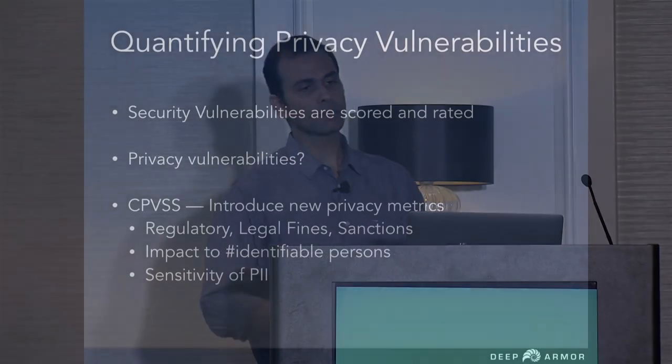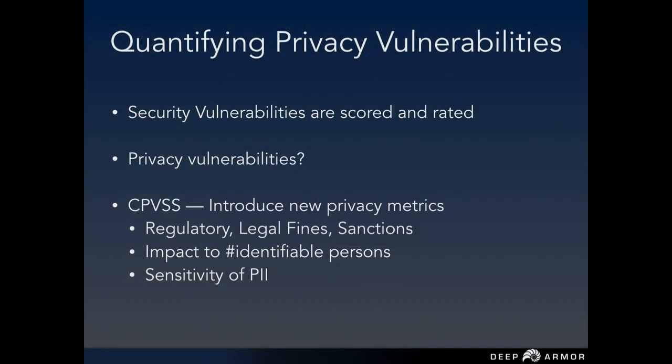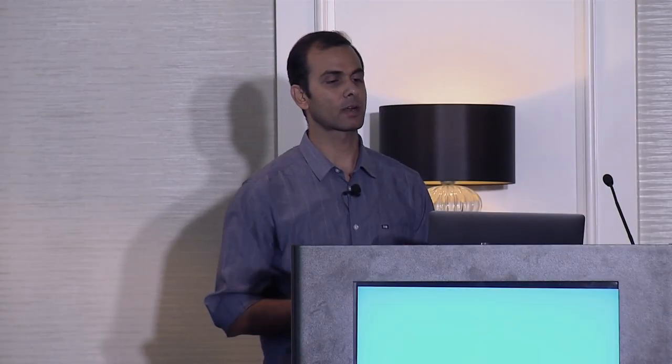As we see more and more privacy concerns in the market, we saw the need for developing a framework for quantifying privacy vulnerabilities. I'm sure all of you are familiar with CVSS — the Common Vulnerability Scoring System — it's great for scoring a security bug on a grade of 0 to 10, with 10 being critical. But because there are so many breaches in terms of private data and user data being stolen and misused, we have a working group working with the CVSS Special Interest Group from FIRST, where we are developing a similar framework for scoring privacy bugs.